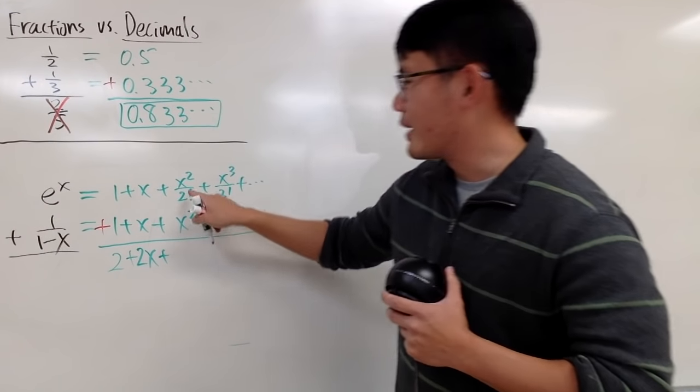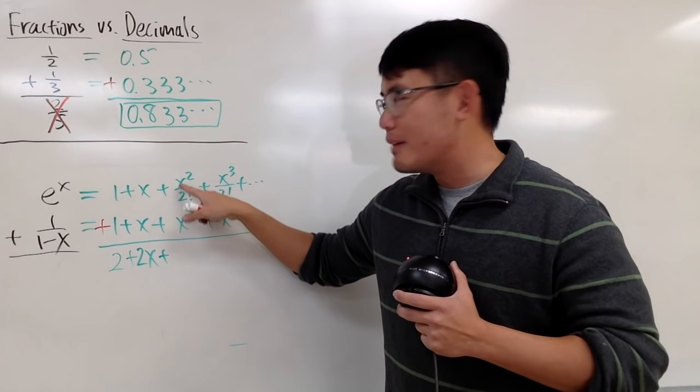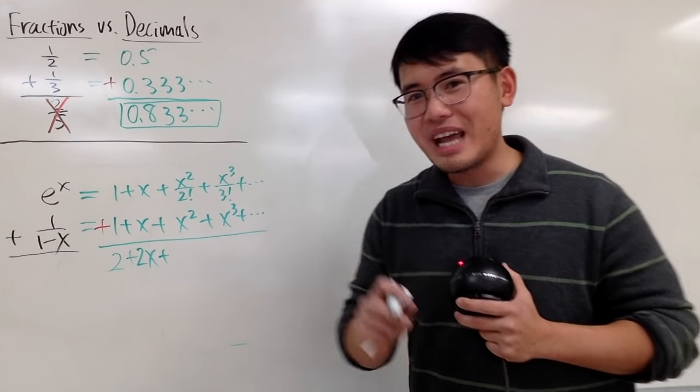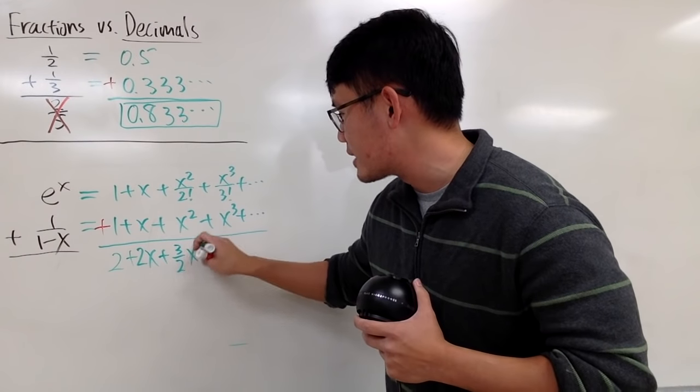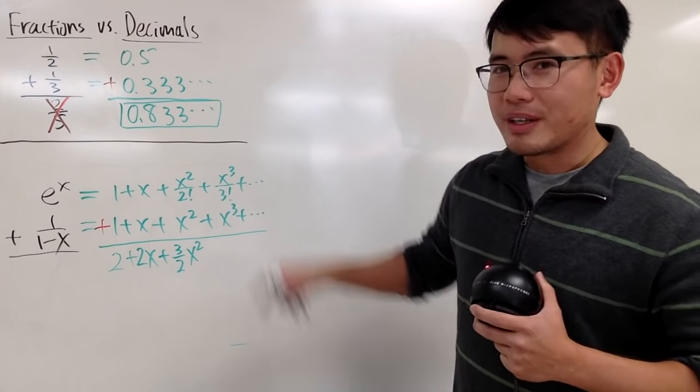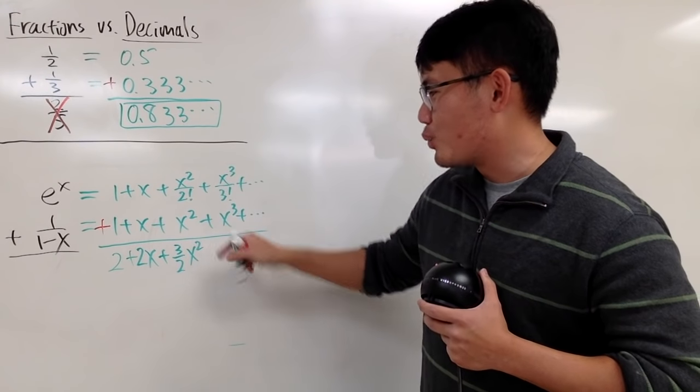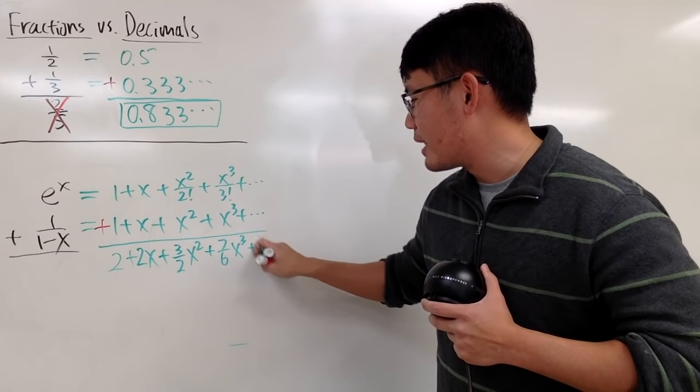And then x plus x is 2x. And plus, okay, 2 factorial means 2 times 1, which is 2. And this is in the denominator, so we have 1 half. We have to do 1 half plus 1. And you have to add the fractions legitimately. 1 half plus 1 is 3 half. And you keep the same term, x squared. And then 3 factorial is 3 times 2 times 1, which is 6. And this is 1 over 6 plus 1, which is 7 over 6. x to the third power plus dot dot dot.